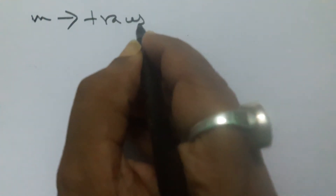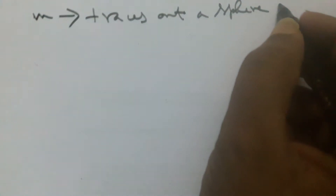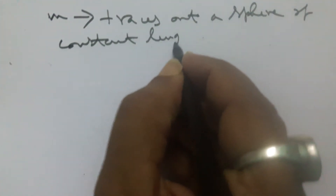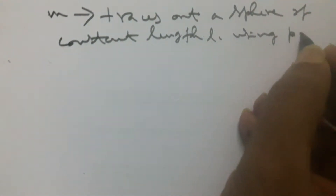Welcome to the viewers. We discuss the spherical pendulum, where the bob of the pendulum can swing in any direction. Taking mass m with a sphere of constant length L and using polar coordinates theta and phi.